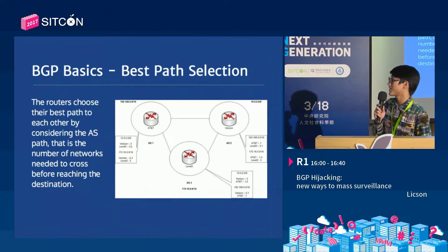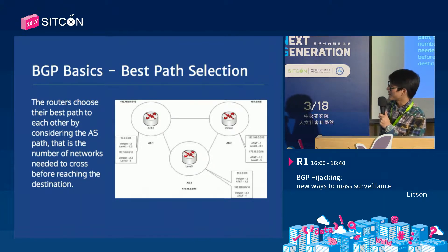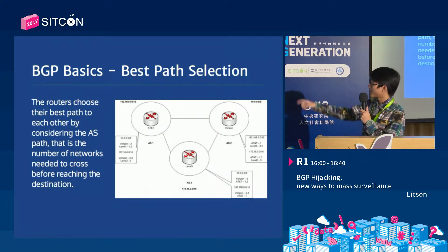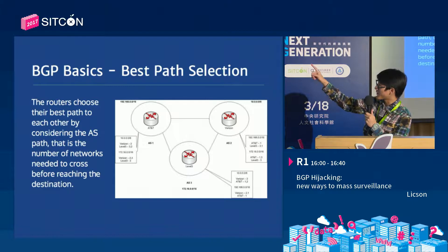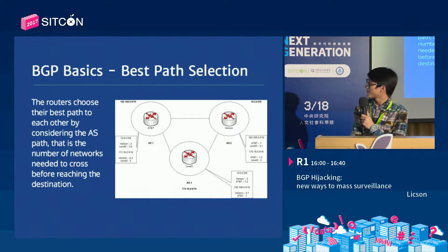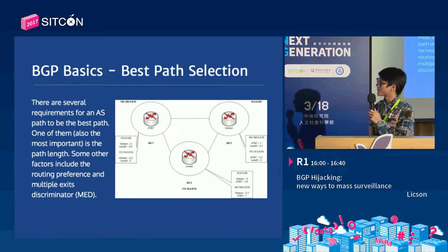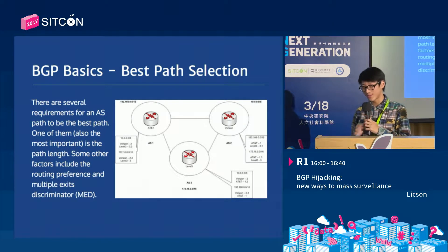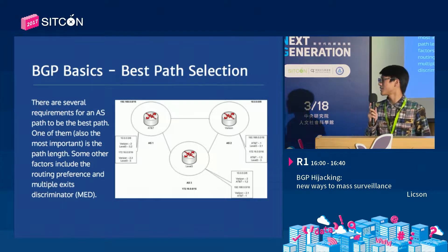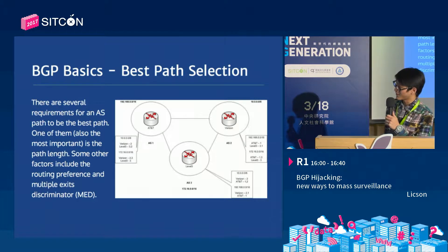Routers choose their best path to each other by considering the AS path length - that is, the number of networks that need to be crossed before reaching the destination. In this example, if AS1 goes to AS3, there are two paths: AS1 directly to AS3, or AS1 to AS3 by going through AS2. The direct connection has a shorter path length, so the direct link will be preferred over the longer link. Other factors include routing preferences set manually, and the Multiple Exit Discriminator, which means if you have more than one connection to the same network at different locations, it will choose the nearest exit.